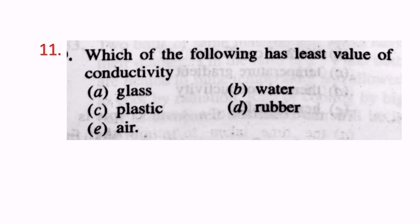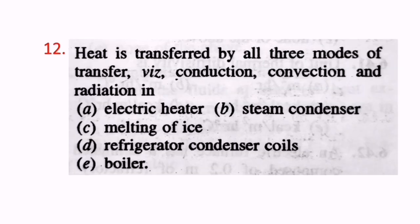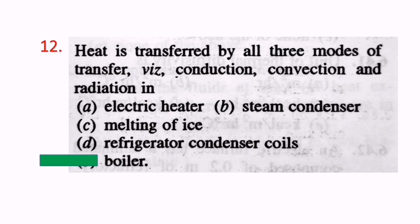Question 11: Which of the following has the least value of thermal conductivity? Air has the least thermal conductivity among glass, water, plastic and rubber. Question 12: Heat is transferred by all three modes — conduction, convection and radiation — in a boiler. In a boiler, all three modes of heat transfer are present.